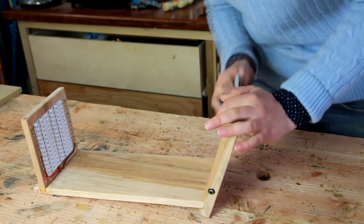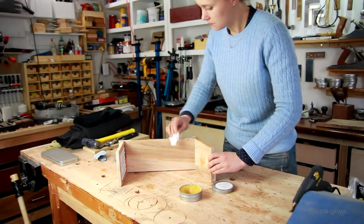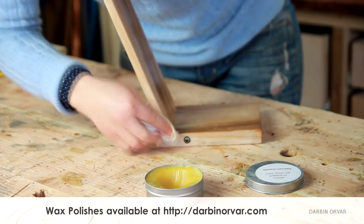So almost done. A little fine sanding. And then I'm putting on a coat of my tung oil wax polish. To make it nice and smooth, and bring out the color a little.